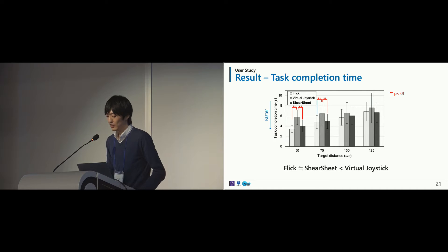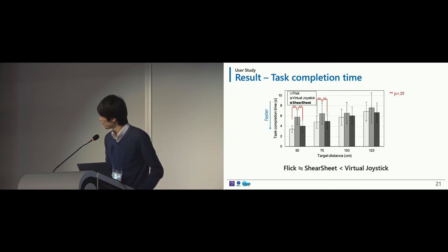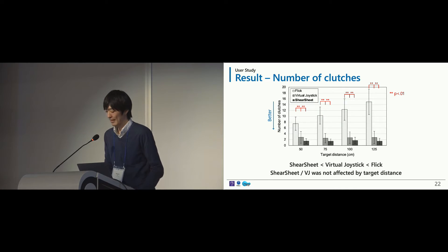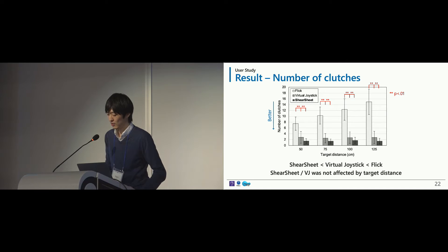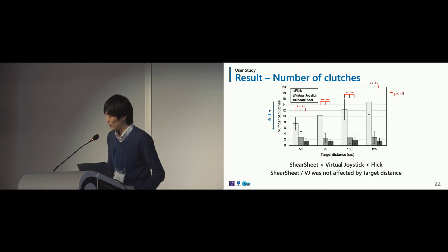This graph shows the result of task completion time for each technique relative to target distance. We found that Shear Seat yielded significantly shorter task completion time than virtual joystick, while no significant difference was found between Shear Seat and flick. This next graph shows the number of clutches relative to target distance for each technique. We found that Shear Seat provided significantly fewer clutches than flick and even less than virtual joystick, and the number of clutches with Shear Seat and virtual joystick was not affected by target distance.